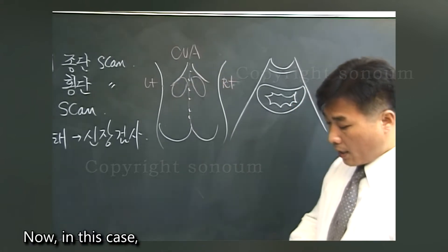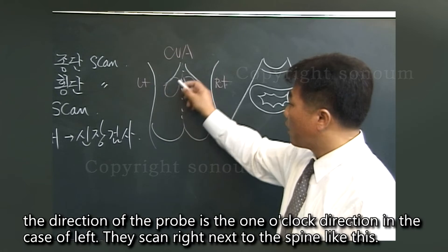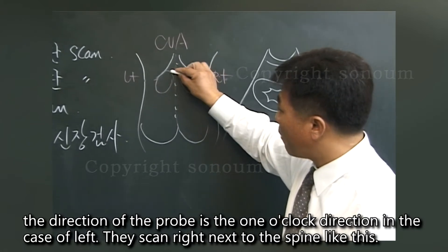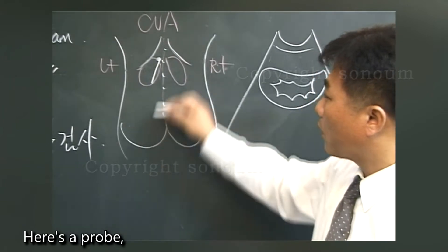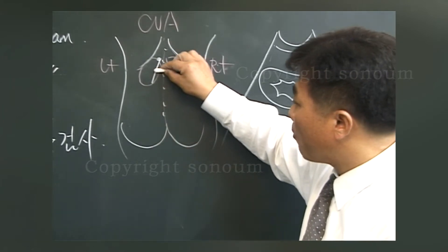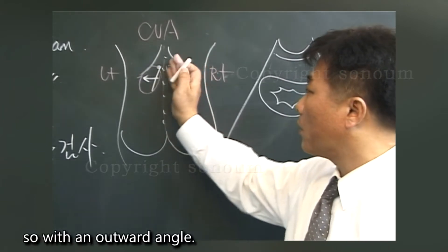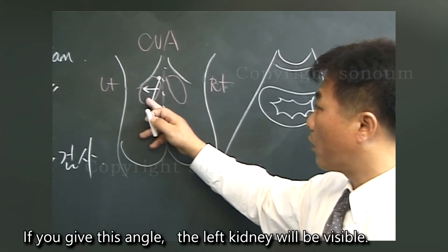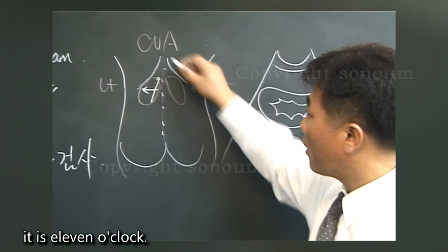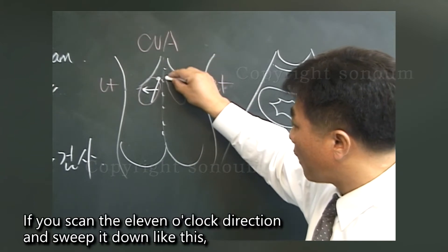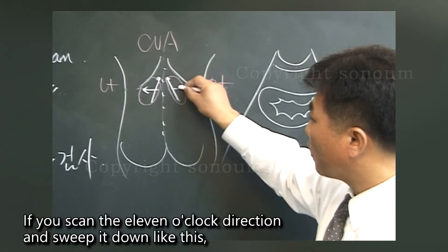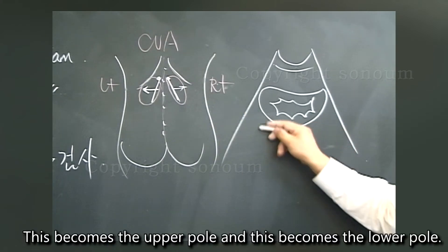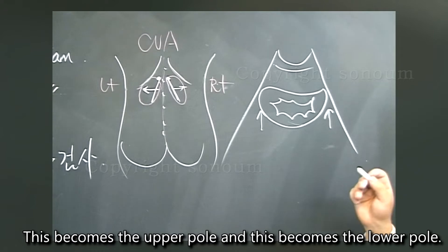In this case, the direction of the probe is the 1 o'clock direction for the left kidney. Scan right next to the spine with an outward angle. If you give this angle, the left kidney will be visible. For the right kidney, it is the 11 o'clock direction. If you scan in the 11 o'clock direction and sweep it down, the kidneys will be drawn. This becomes the upper pole and this becomes the lower pole.